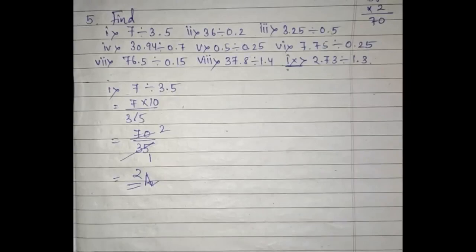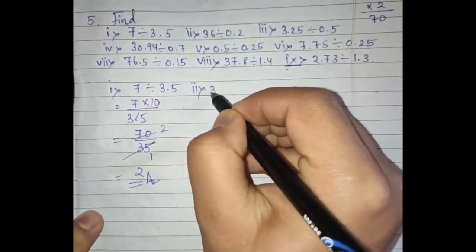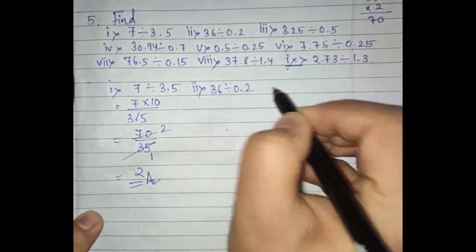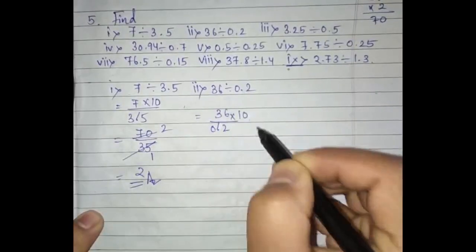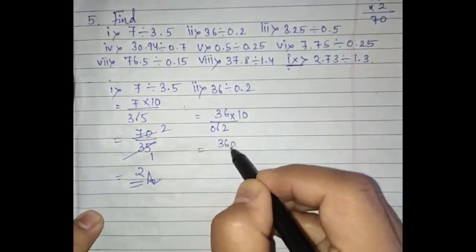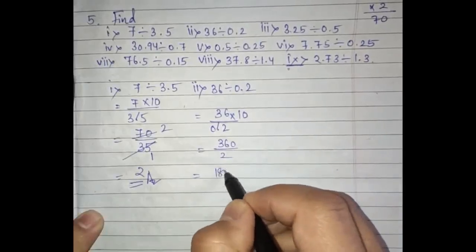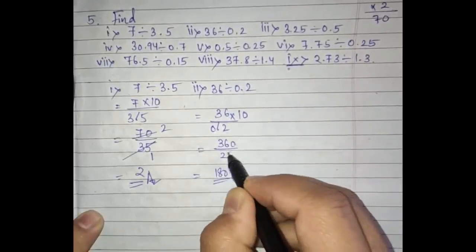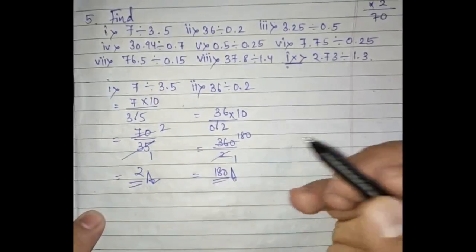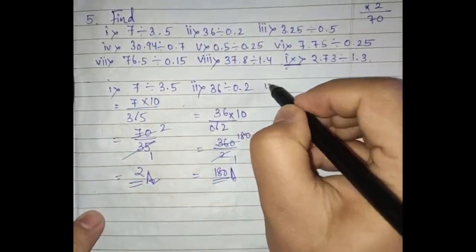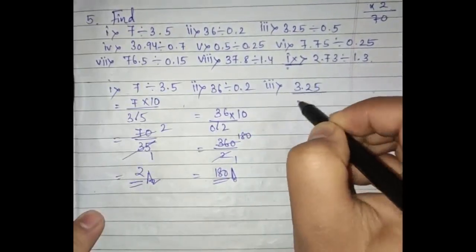Number two: 36 divided by 0.2. Remove the decimal point and write 10 above, giving 360 divided by 2. Since 2 times 180 equals 360, the answer is 180. Number three: 3.25 divided by 0.5. Write 0.5 below — it has one decimal digit so write 10, and 3.25 has two decimal digits so write 100 above.